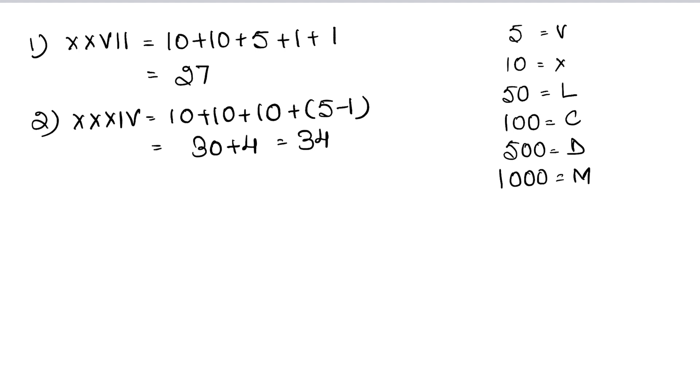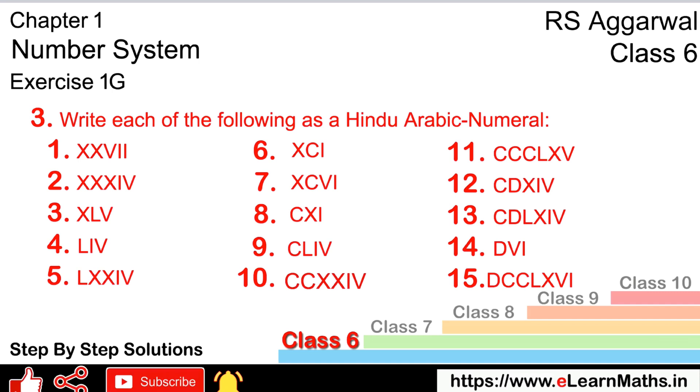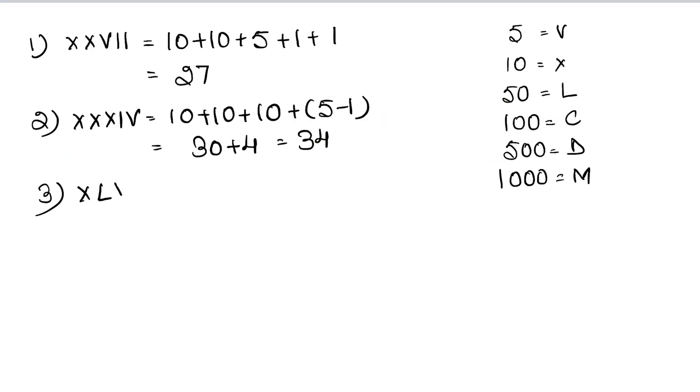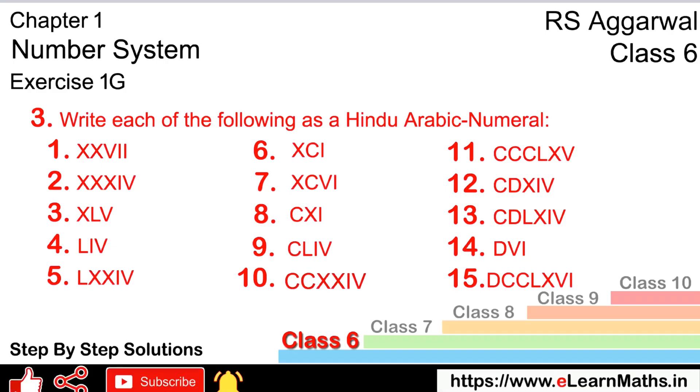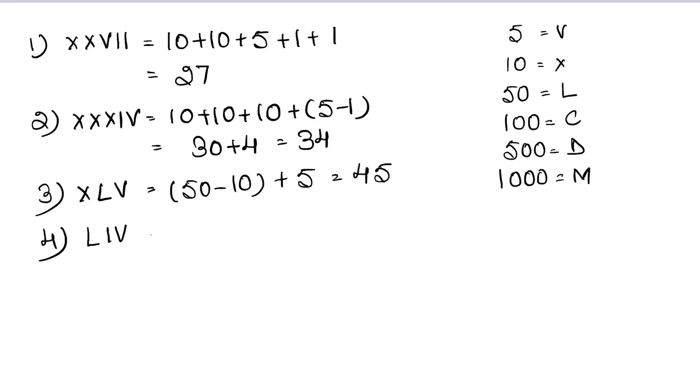Whenever these values appear with 1 or 10 before them, that means 1 or 10 minus, or 100 minus. Third part is XLV. X L is 50, and X before it means 40, plus V is 5. So 50 minus 10 plus 5, that is 45.